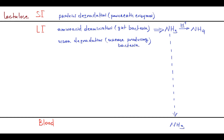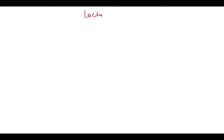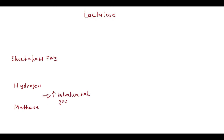Because lactulose cannot be degraded in the small intestine, it reaches the large intestine unchanged. However, colonic bacteria have an enzyme to split lactulose, and it is metabolized first to monosaccharides and then to short-chain fatty acids, hydrogen, and methane. These products of lactulose degradation cause a decrease in ammonia absorption and ammonia production. The products are short-chain fatty acids, hydrogen, and methane, and the increase in hydrogen and methane results in increased intraluminal gas production.